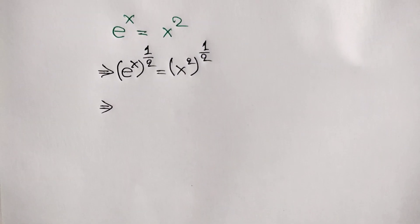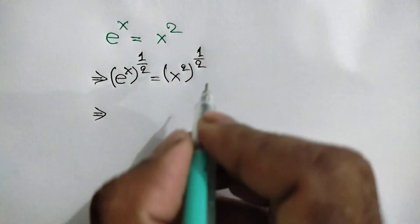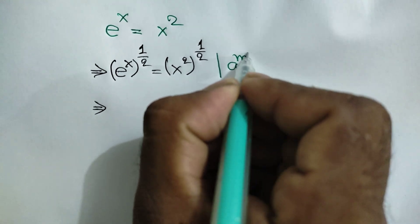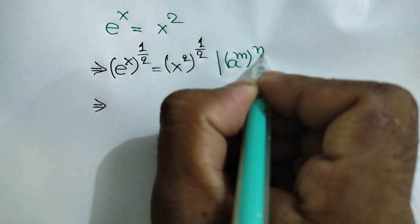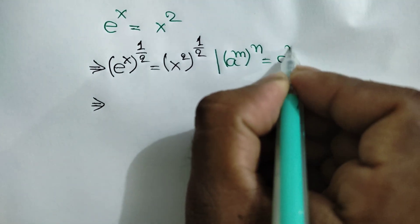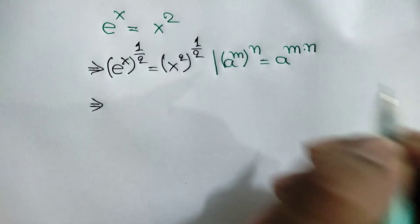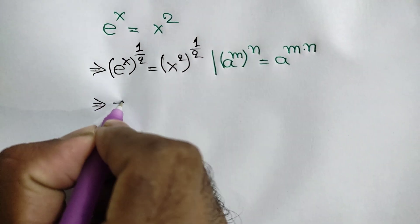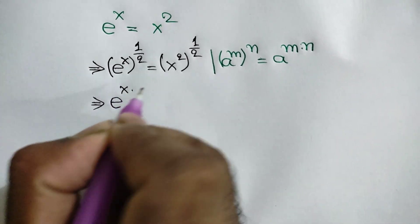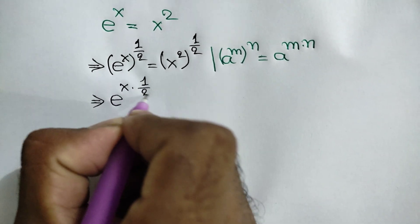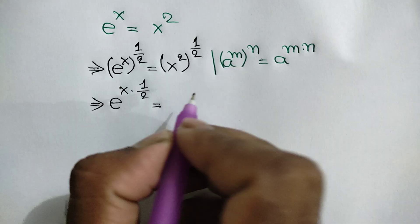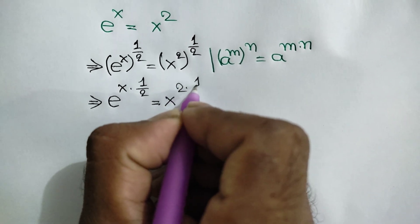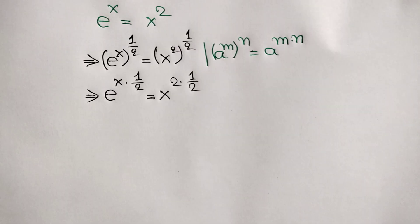Now we know an exponential rule: a to the power m, whole to the power n, is equal to a to the power m times n. Applying this formula, we can write e to the power x times 1 over 2 is equal to x squared times 1 over 2.